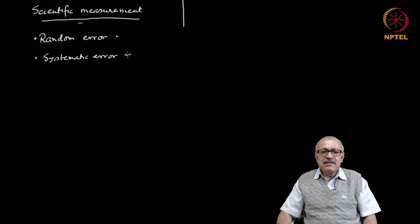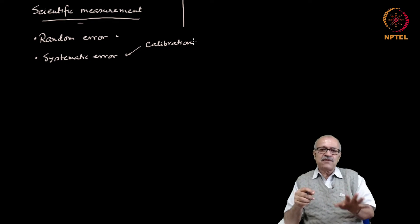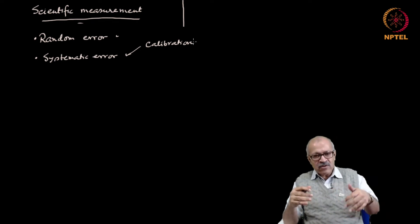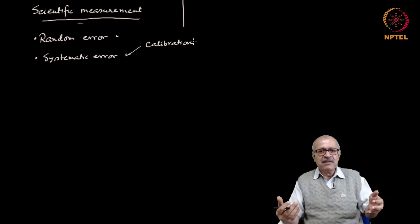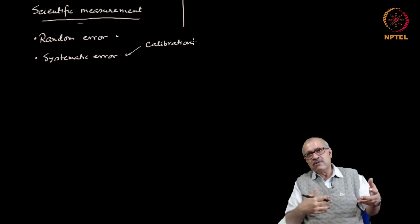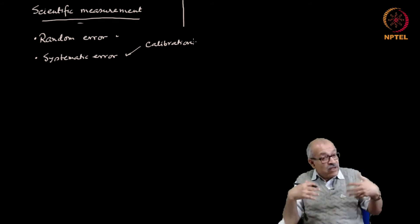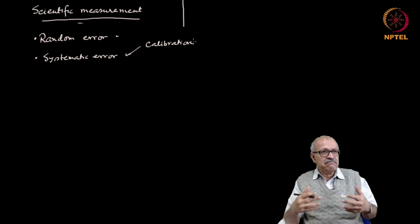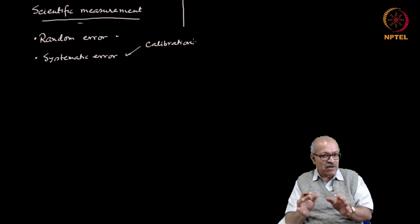The first is calibration. Wrong calibration is the most common source of systematic error. And therefore it is necessary to periodically recalibrate all the equipment that you use. Because with age the calibration goes bad, with environmental conditions the calibration may change. So recalibration every now and then is necessary for every equipment. And we scientists sometimes do rely on whatever a big equipment churns out without bothering whether it is properly calibrated or not. So it is very important to check the calibration.